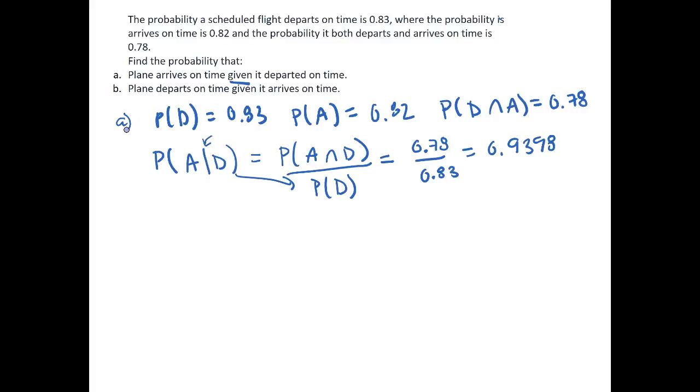Now these questions seem very similar but they're actually different and we'll get a different value. What is the probability that the plane departs on time given it arrives on time? Now this is a little bit different, where now we're asking what is the probability of D given A.